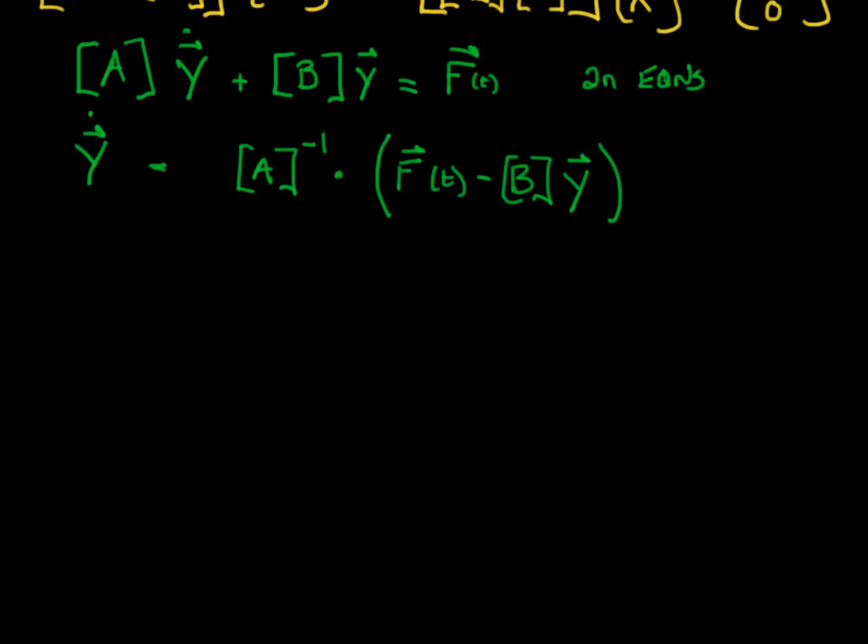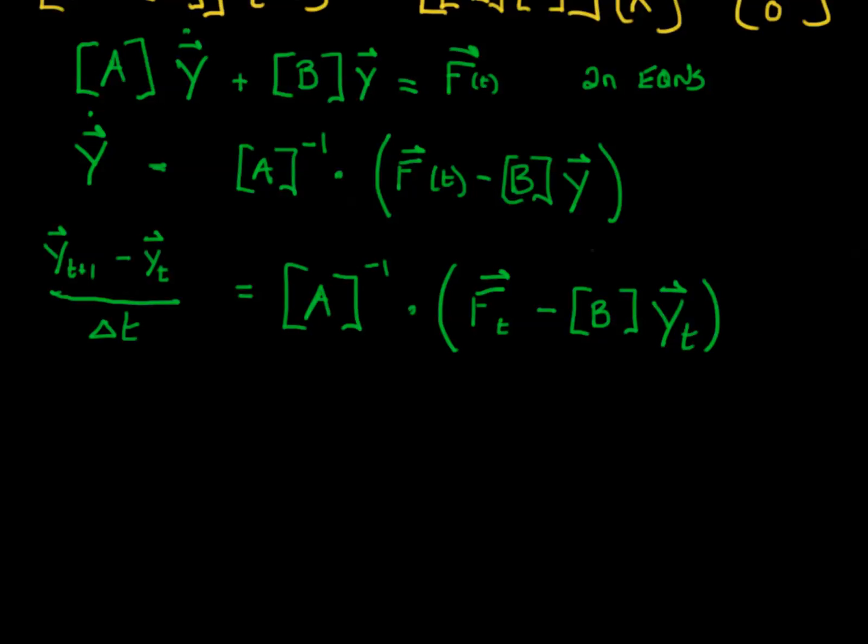So now if I want to discretize this, the time derivative of y can be written as follows in discrete form. I can take the y vector at time t plus 1 minus y at time t, divided by my time step delta t. And that is equal to A to the minus 1 times f at time t minus B times y at time t. And we're going to assume in this case that both the A matrix, which is really the mass matrix, and B, which is the stiffness and damping matrix, are not functions of time, that they're constant.